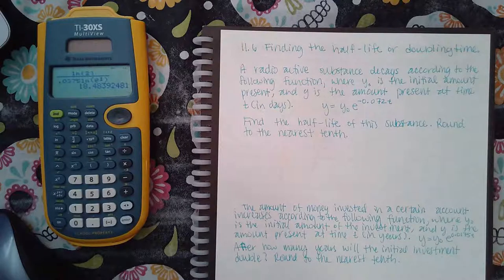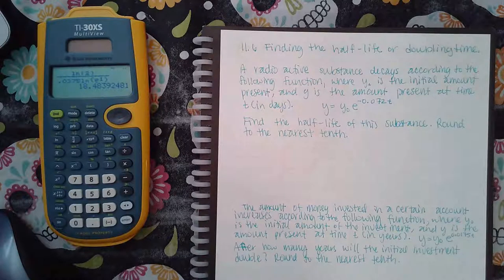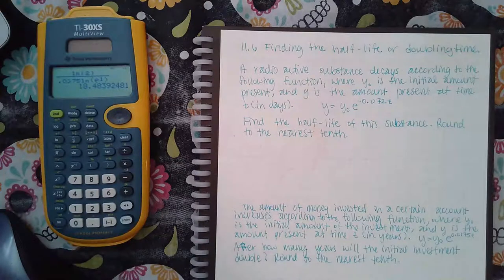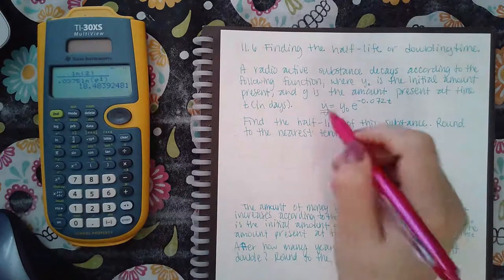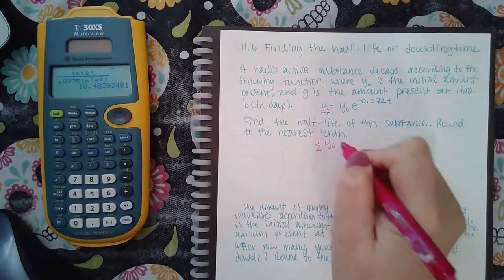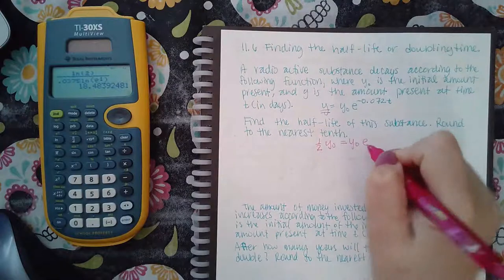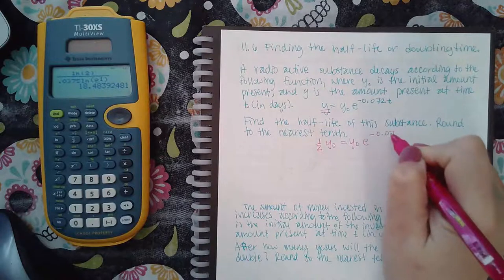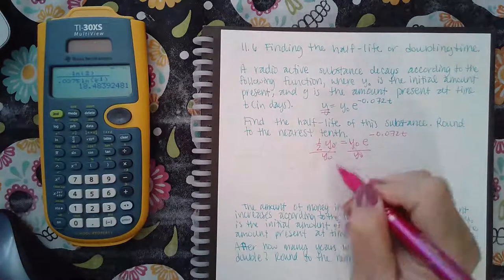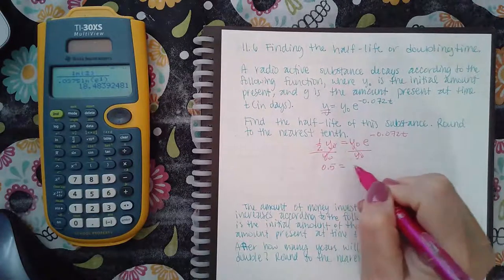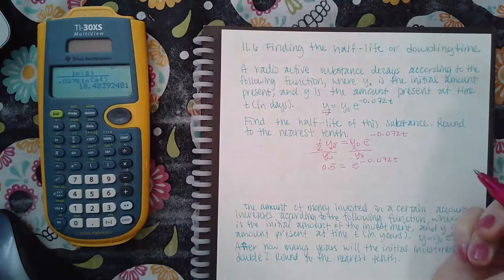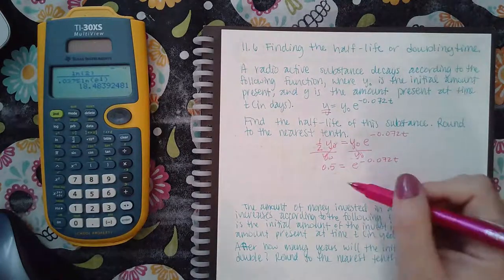Find the half-life of this substance, round to the nearest tenth. Half-life means that the amount afterward is going to be half of what you started with, which is the initial amount. If I divide both sides by that initial amount it'll cancel there and you get 0.5 equals e to the negative 0.072t.